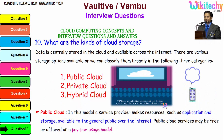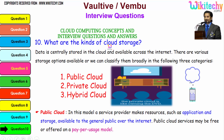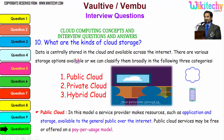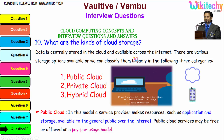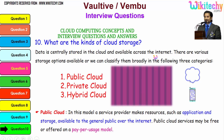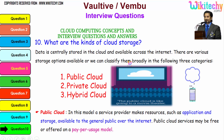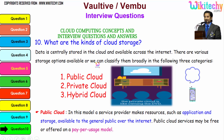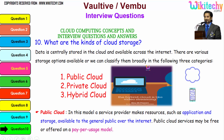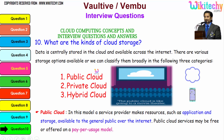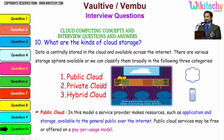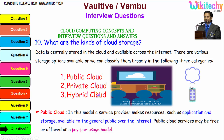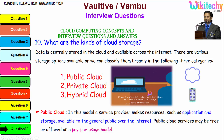Now let's talk about the kinds of cloud storage. Data is centrally stored in the cloud and available across the internet. There are three major storage options, broadly classified into: public cloud, private cloud, and hybrid cloud.